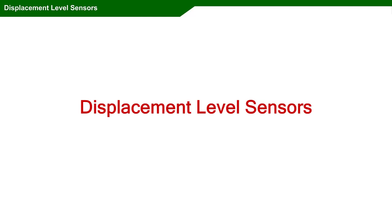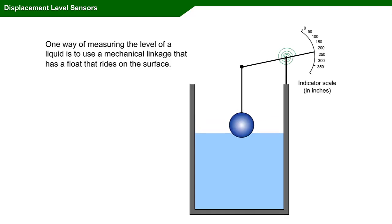Welcome to this WISC-Online module on Displacement Level Sensors. One way of measuring the level of a liquid is to use a mechanical linkage that has a float that rides on the surface.